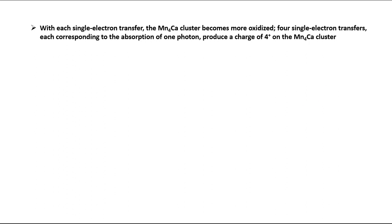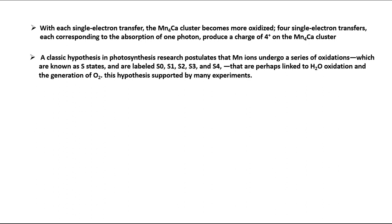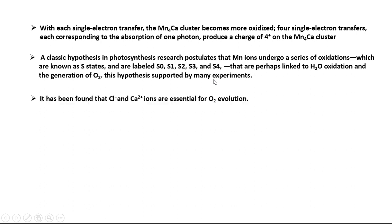A classic hypothesis in photosynthesis research postulates that Mn ions undergo a series of oxidations known as S-states, labeled S0, S1, S2, S3, and S4, linked to H2O oxidation and the generation of O2. This hypothesis is supported by many experiments. It has been found that Cl- and Ca2+ ions are essential for O2 evolution.